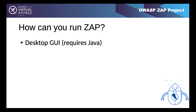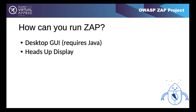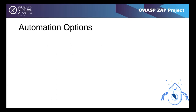ZAP can be run in several ways. There's a desktop GUI which requires Java, though you can also run it in Docker. There's a Heads Up Display that injects ZAP content into your browser. Automation is a key strength for ZAP - it's one of the things ZAP does particularly well, and many people use ZAP in automation more than manual testing. There are lots of different ways to automate ZAP.